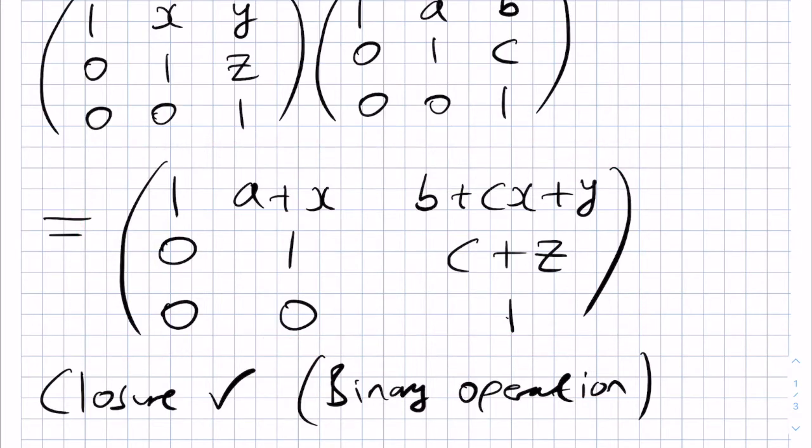Therefore, we need this to be 0, this to be 0, and this to be 0. Again, X, Y, and Z are fixed, and so we're choosing A, B, and C appropriately so that we get the identity matrix.